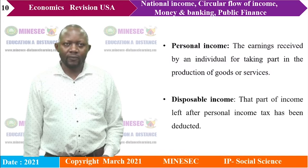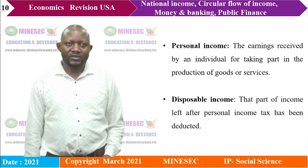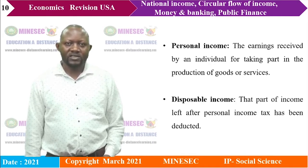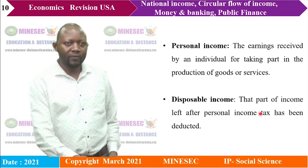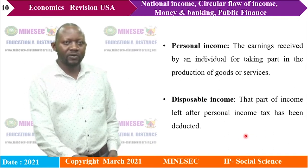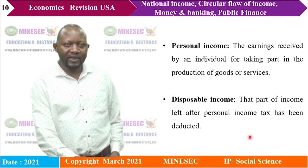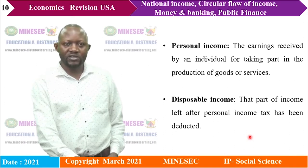We have personal income — the earnings received by an individual for taking part in the production of goods and services. Personal income represents household earnings when taxes have not yet been deducted. Then we go to personal disposable income, which is that part of your personal income after you have paid your personal taxes — that part of income left after personal tax has been deducted.